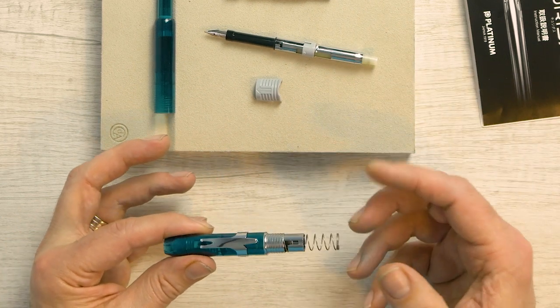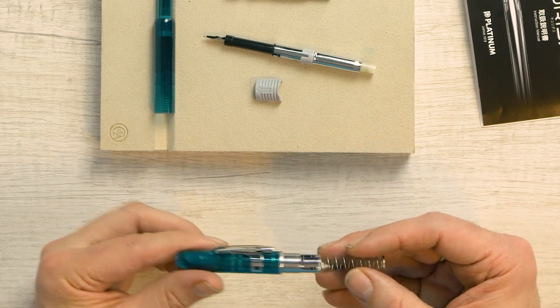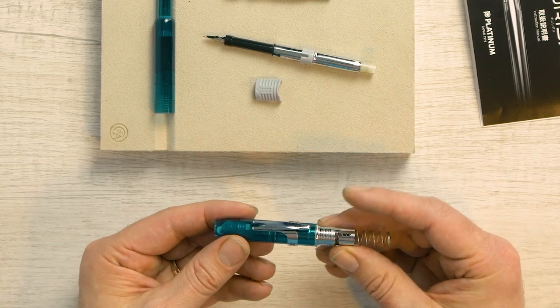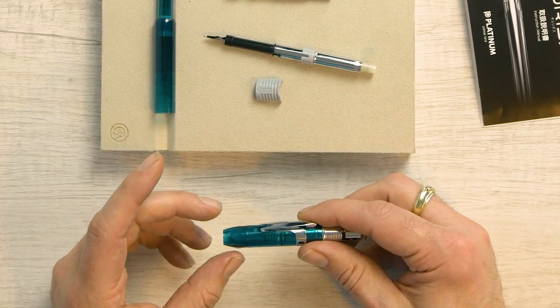Inside here, really not much to see. We've got this spring here which gives us the tension. You can see inside another spring here, the trap door. This is not something you should be taking apart.